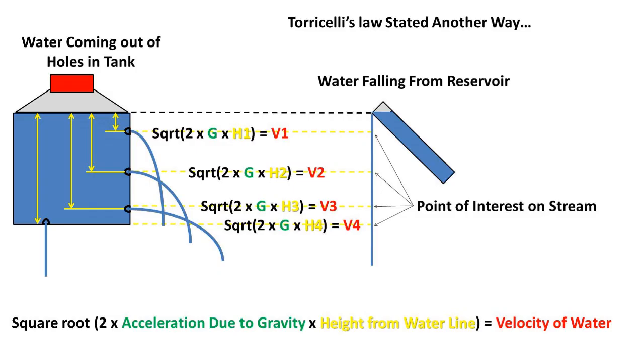Stated another way, if you put holes in a tank and let liquid fall from another reservoir from the waterline of the tank, the fluid coming out of the holes will have the same velocity, but possibly a different direction, as the fluid directly across from it falling from the waterline.